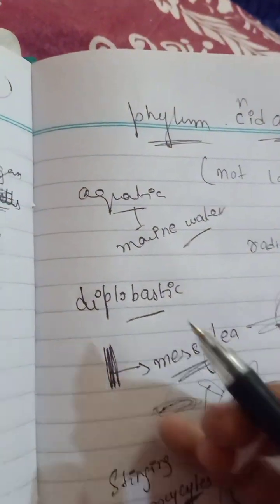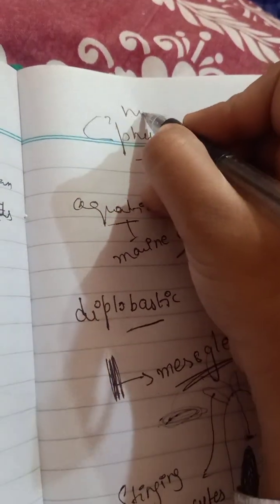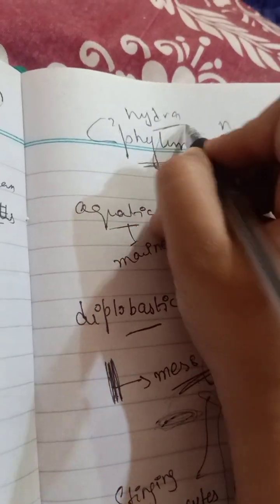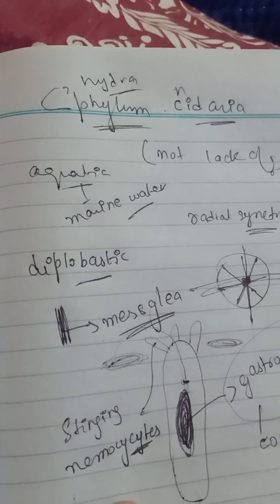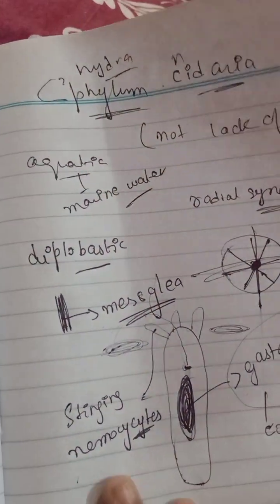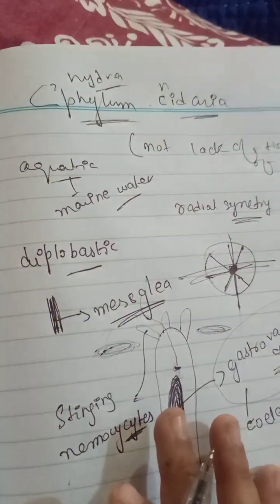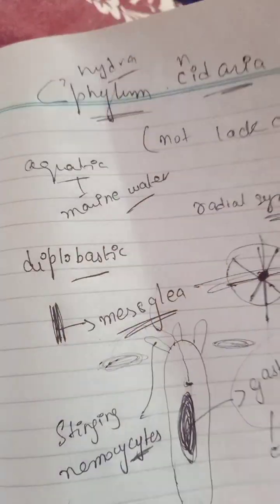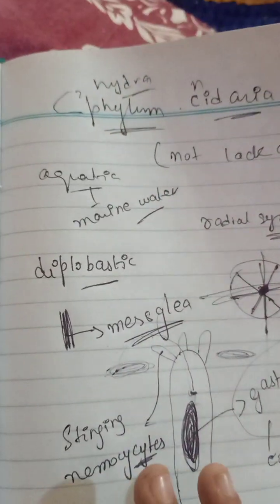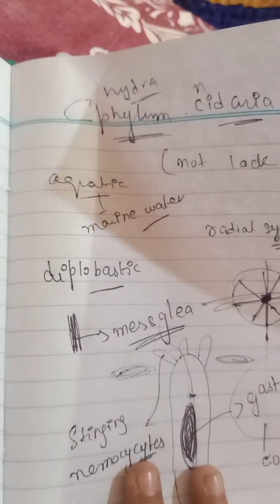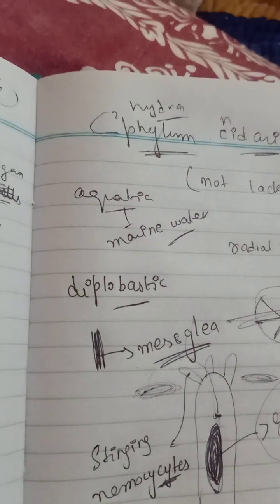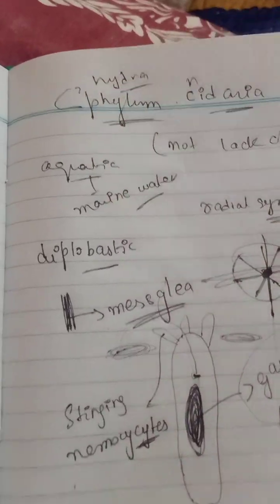You can take the example of hydra. We have also discussed hydra in the nutrition chapter in great detail. But this is a new chapter — hydra belongs to phylum Cnidaria, so we have to discuss it again here.